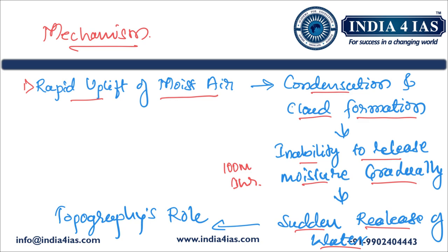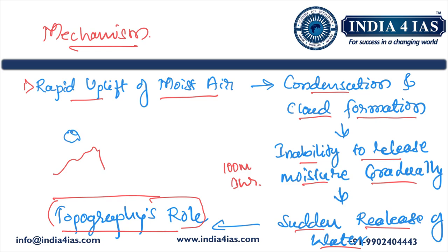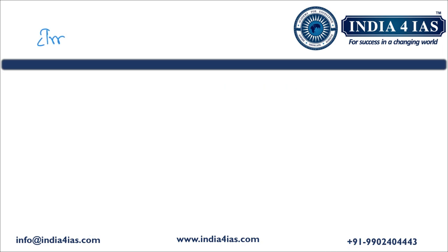The last point in the mechanism is topography's role. Mountainous regions have steep slopes and steep terrain, so cloud formation is rapid, and after rainfall the flash floods that happen are also rapid — as witnessed in Uttarakhand, Himachal Pradesh, and Jammu & Kashmir. Because of all these reasons, cloudbursts are considered one of the natural disasters.